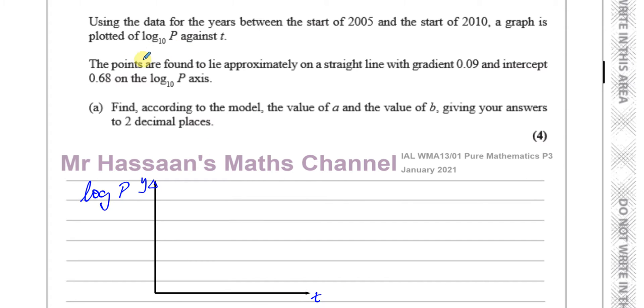It says that the points are found to lie approximately on a straight line with a gradient of 0.09, so it's like a slight positive gradient, and an intercept of 0.68 on the log P axis. So it crosses at 0.68 and it has a positive gradient. The gradient of this line is equal to 0.09.